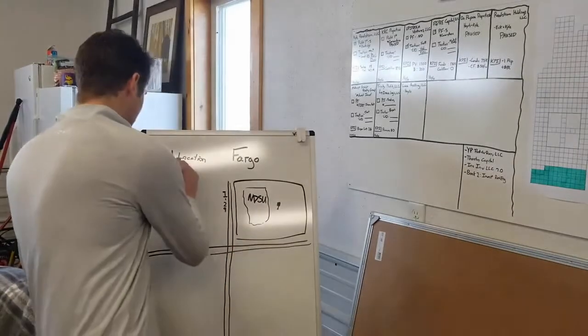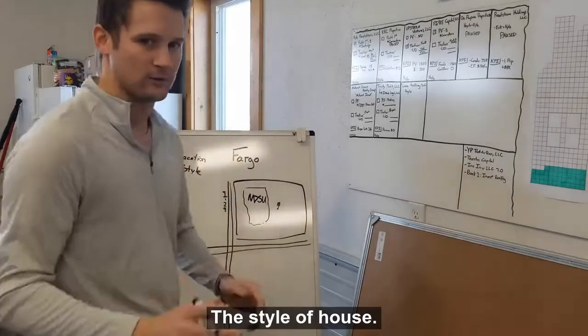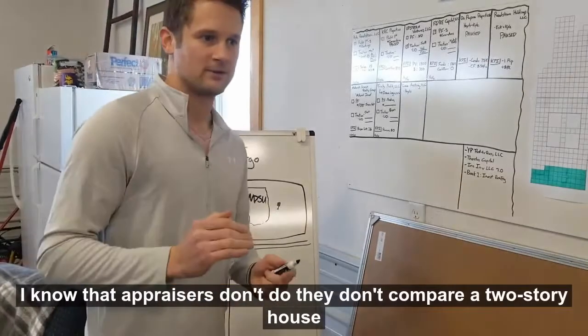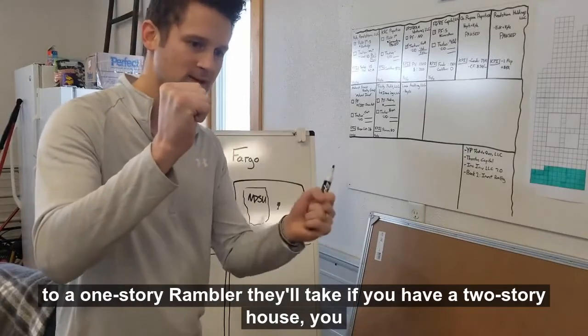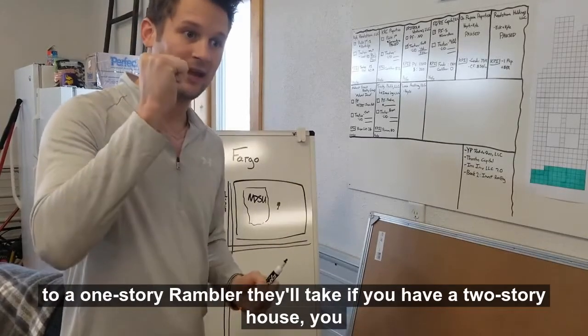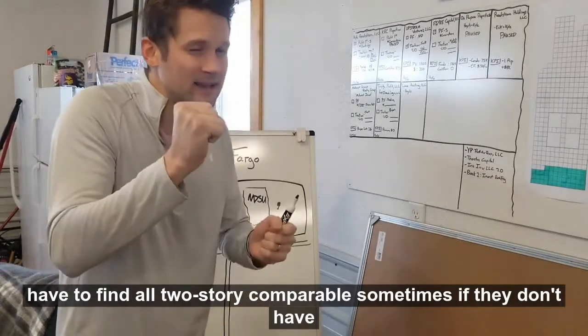Number two, which a lot of people get confused with, is actually the style of house. Here's the thing I know that appraisers don't do: they don't compare a two-story house to a one-story Rambler. If you have a two-story house, you have to find all two-story comparables.